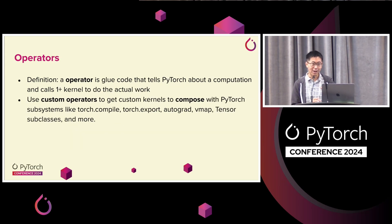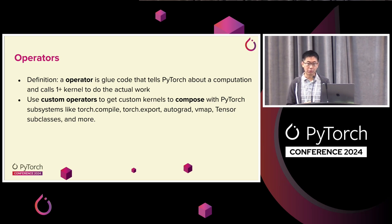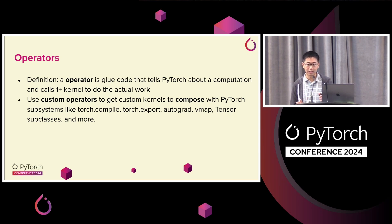Now I want to talk about operators. These are slightly different from kernels — there's a bit of nuance. An operator is some glue code that tells PyTorch about a computation and that calls one or more kernels to actually do the computation. The glue code allows the custom operator with its kernels to actually work with PyTorch subsystems like Torch.compile, Torch.export, Autograd, and so on.